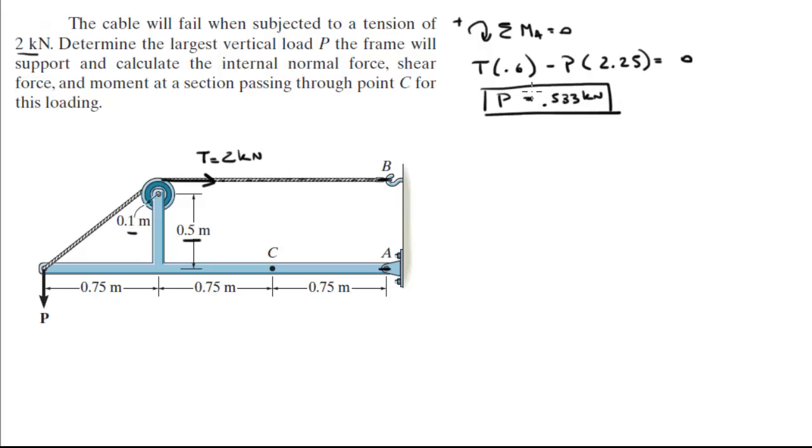So now that we have the value of P we can find the reactions at A, AX and AY. Sum of the forces on the X is equal to 0, so you know that T minus AX is equal to 0 which means that AX comes out to be 2 kN. Sum of the forces on the Y is also equal to 0 so you know that minus P plus AY is equal to 0. So that means that AY is equal to 0.533 kN.